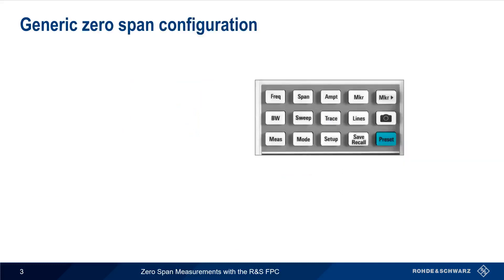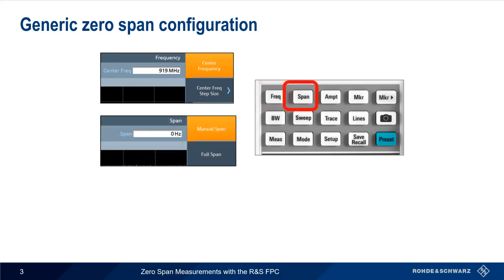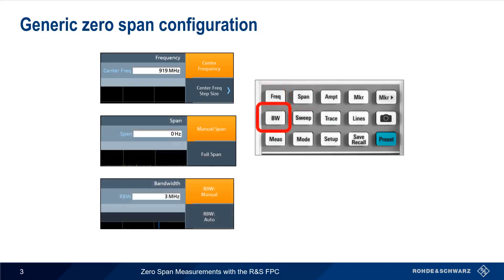Setting up a zero-span measurement on the FPC is not that much different than making standard power versus frequency measurements. We set the center frequency as usual, but set span equal to zero. We'll also need to choose an appropriate resolution bandwidth. Remember that resolution bandwidth is a critical setting for making measurements in zero-span mode.